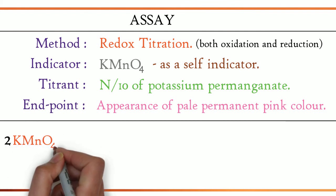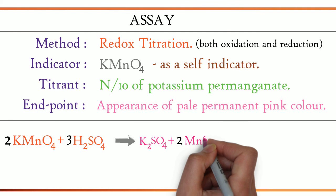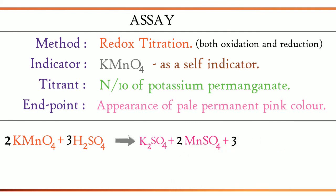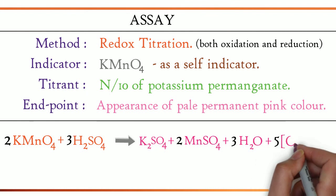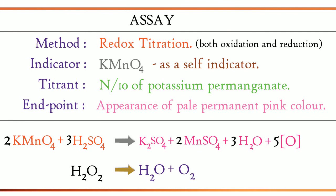2 KMnO4 plus 3 H2SO4 gives K2SO4 plus 2 MnSO4 plus 3 H2O plus 5 O. Potassium permanganate titrated with sulfuric acid gives potassium sulfate, manganese sulfate, water, molecular oxygen. The other equation is as follows: H2O2 gives H2O plus O2.